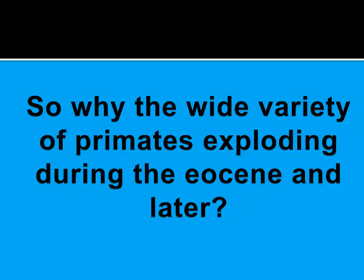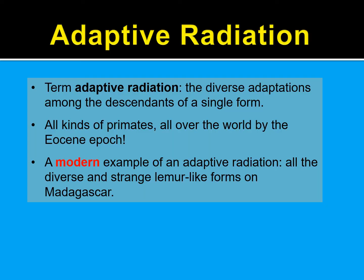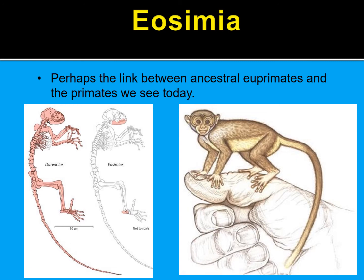Why was there a wide variety of primates exploding during the Eocene period? This comes back to adaptive radiation — the diverse adaptations among the descendants of a single form. There were all kinds of primates all over the world by the Eocene epoch. A modern example of adaptive radiation would be the diverse and strange lemur-like forms we see on Madagascar. Eosimias is a possible link between ancestral euprimates and the primates we see today, comparable to what we call pygmy marmosets — very, very small monkeys from Asia.